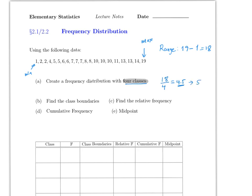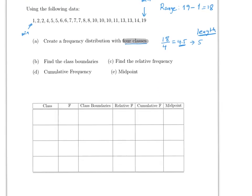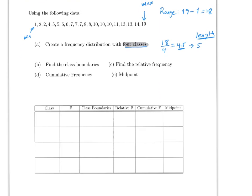The length of each class is going to be five. So the first class is going to be from 1 to 5, the second class from 6 to 10, the third from 11 to 15, and the last one from 16 to 20.